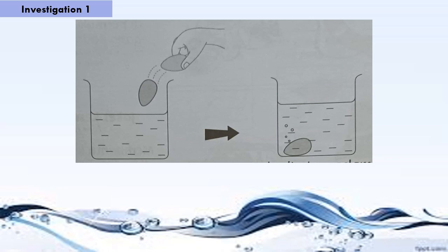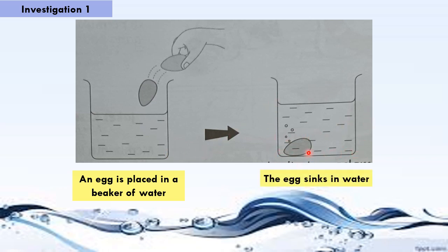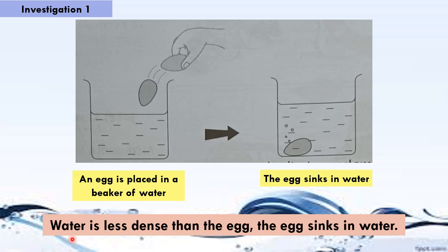In Investigation 1, an egg is placed in a beaker of water. Once the egg is placed in the beaker, the egg sinks in the water. Why does the egg sink in water? Yes, the water is less dense than the egg. Therefore, the egg sinks in water.